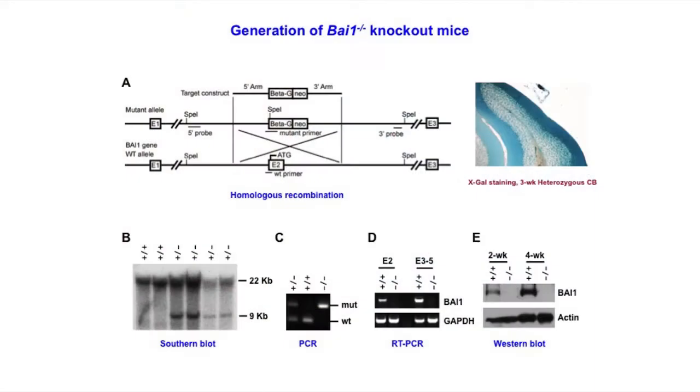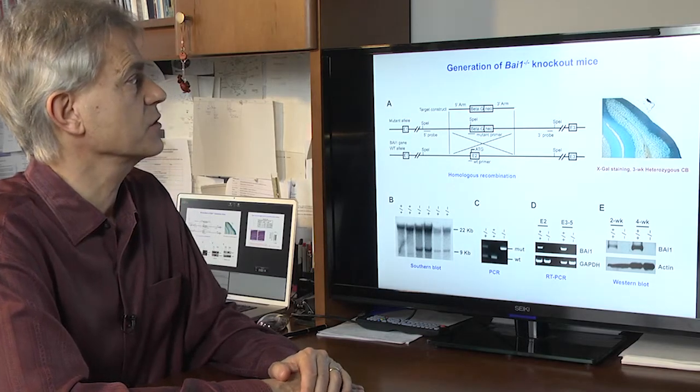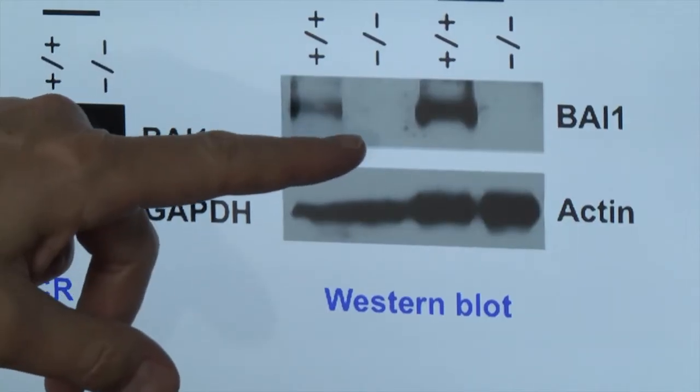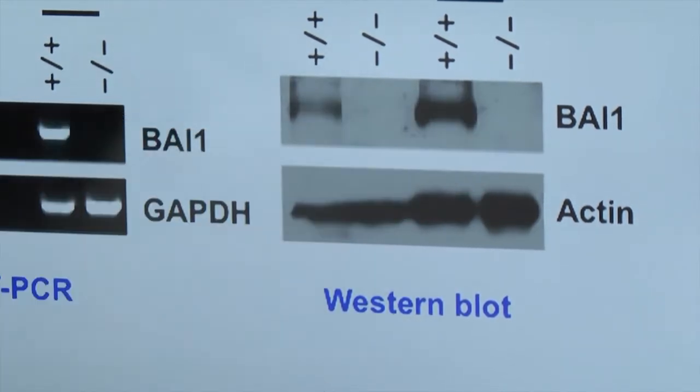We decided to build what we call a knockout mouse, that means a mouse that is missing the gene of interest, in this case BAI1, and we can see that indeed these mice are missing the protein BAI1.